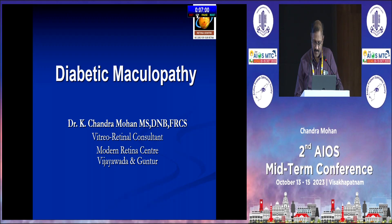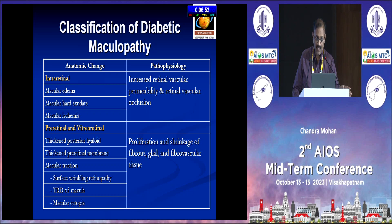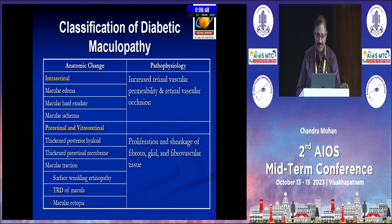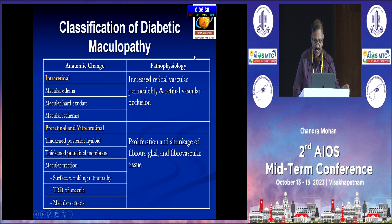Diabetic maculopathy encompasses a whole array of changes that occur in the retina, vitroretinal interface, and in the surface of the retina. Intra-retinal vascular permeability and vascular occlusion are causes for the intra-retinal changes like macular edema, macular hard exudates, and macular ischemia.